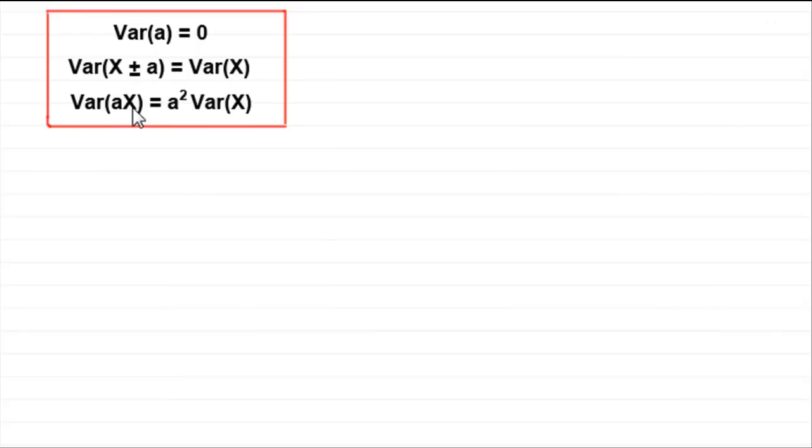And finally, the variance of a constant times a random variable X is always equal to a squared times that variance of X.